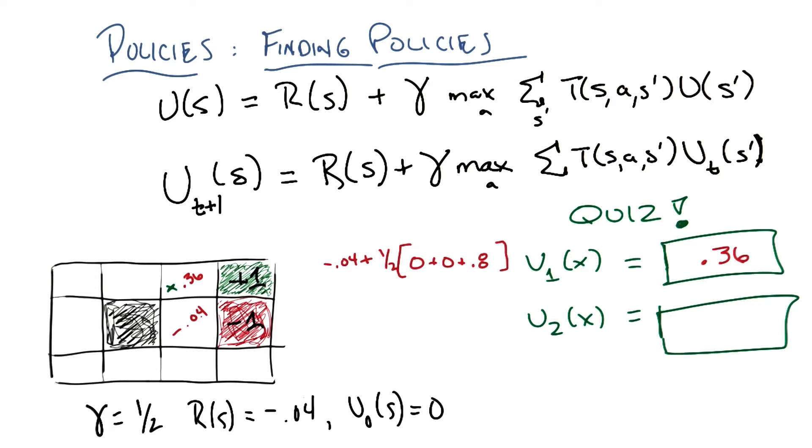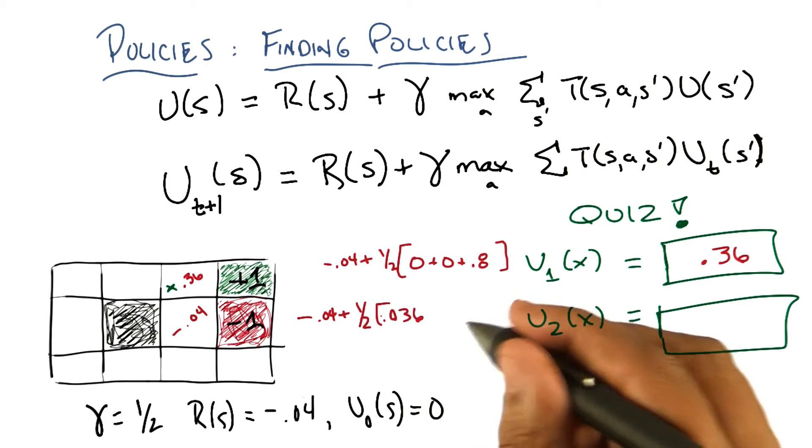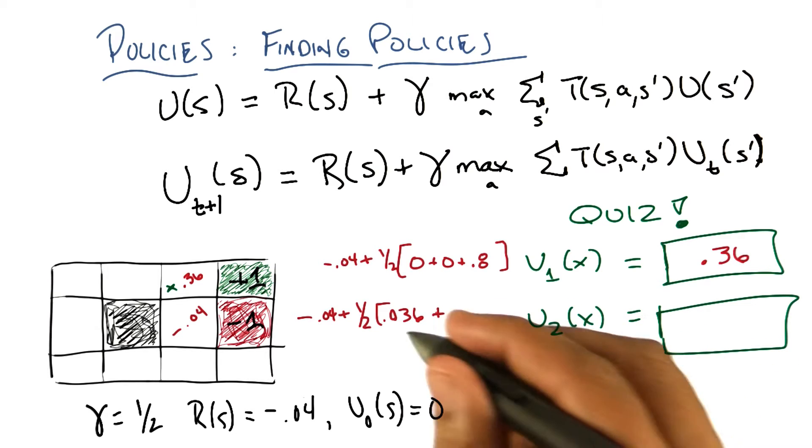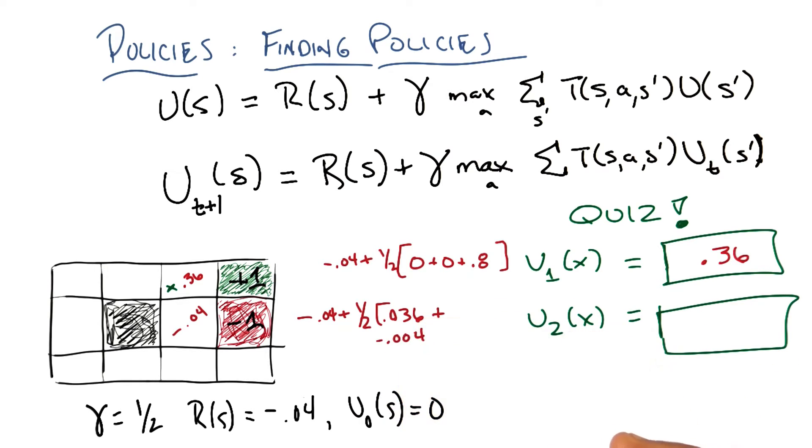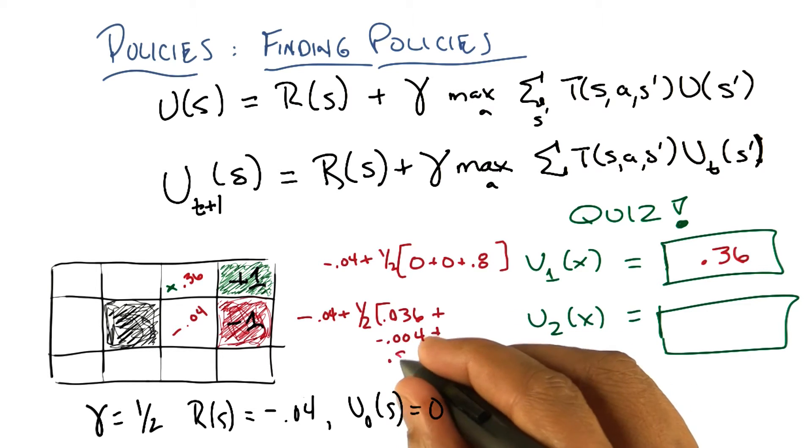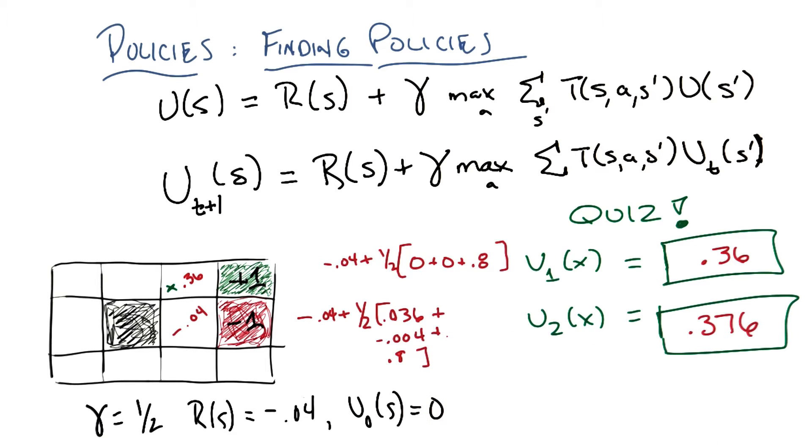So now, for our u2 values, we need minus 0.04 plus a half times 0.1 times 0.36 plus 0.1 times negative 0.04, so that's minus 0.004, plus 0.8 times 1. Which is 0.8 again. Just like it was last time. Yep. And I get 0.376. Which is what I get by also getting out your calculator. Okay. So 0.376, and you can imagine how we would do that on and on.